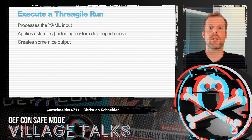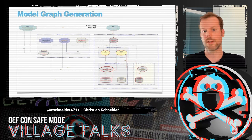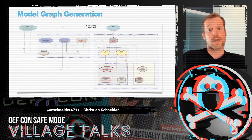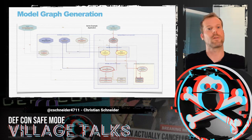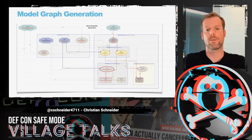When you execute ThreadGile on the command line, it processes the YAML input and applies the risk rules. There are lots of built-in risk rules and you can add custom ones. First, it gives a model graph — it generates a model graph so you can see whether you have modeled something wrong or something is missing from your architecture. The colors in the lines and shapes refer to the sensitivity of the data, depending on the data ratings. A red border means very sensitive data is stored there; a red line means very sensitive data is being transferred. Yellow shapes indicate custom developed code, and the shape type depends on whether it's a data store, process, external entity, or a client used by a human.